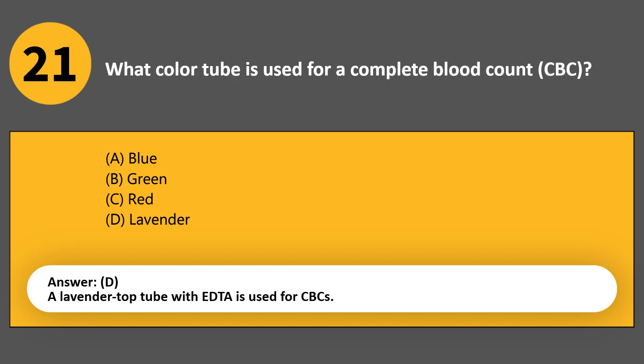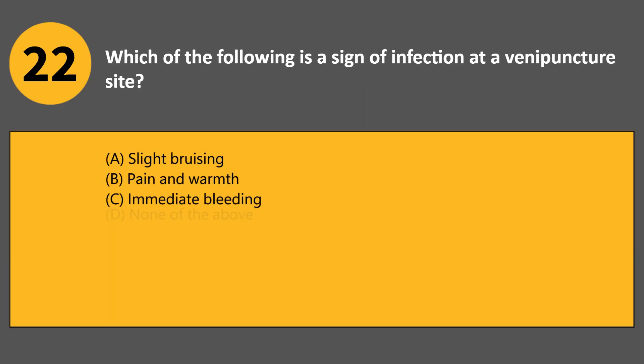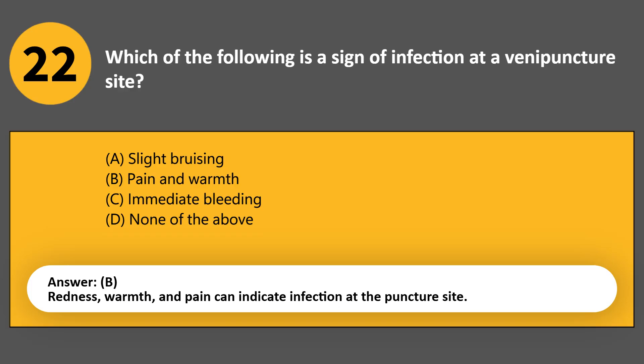Which of the following is a sign of infection at a venipuncture site? A. Slight bruising. B. Pain and warmth. C. Immediate bleeding. D. None of the above. Answer B. Redness, warmth, and pain can indicate infection at the puncture site.